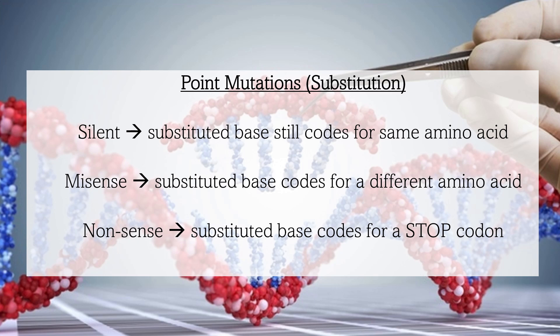A missense mutation is a substitution of a base pair that results in a different amino acid being incorporated into the amino acid sequence, which can affect how the protein is formed. A nonsense mutation is a substitution that results in a stop codon presenting prematurely. This leads to early termination of the amino acid sequence, and can result in a protein not forming correctly, or at all.